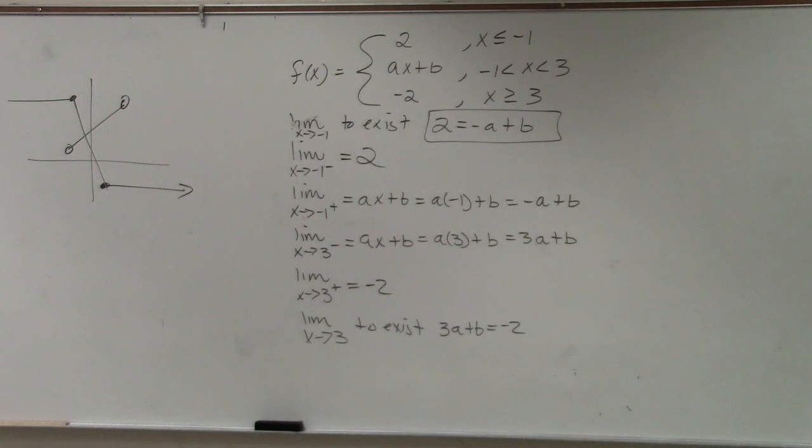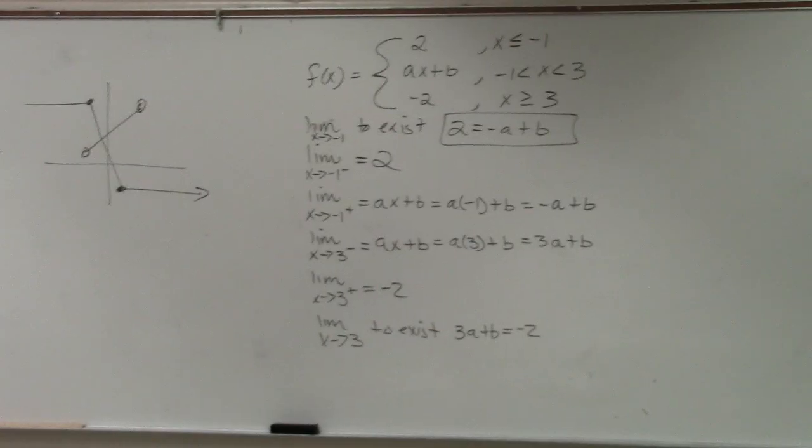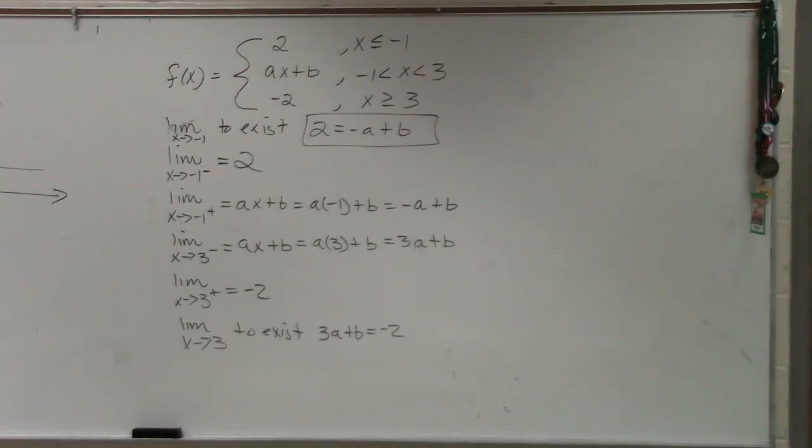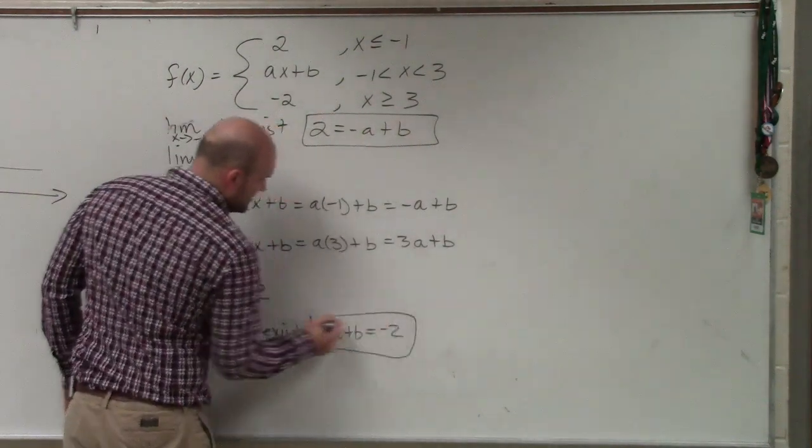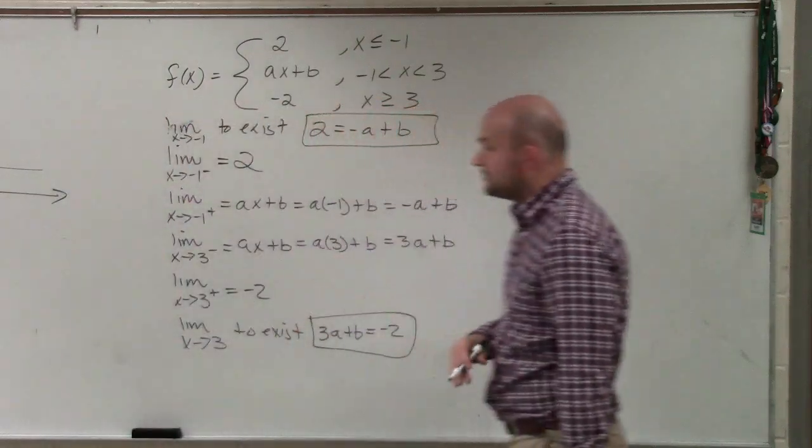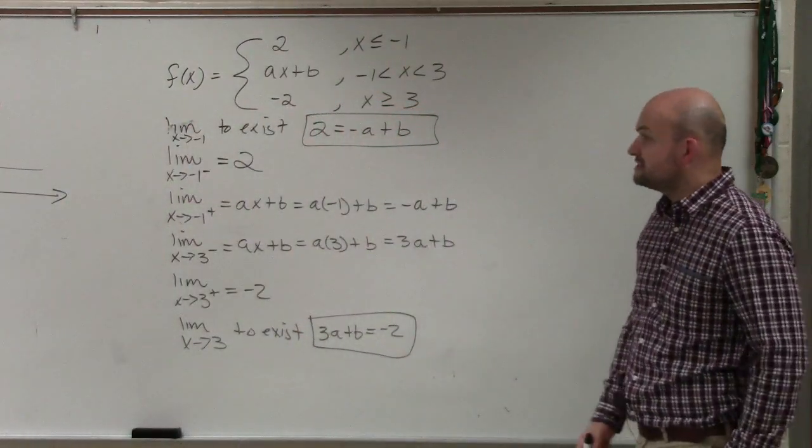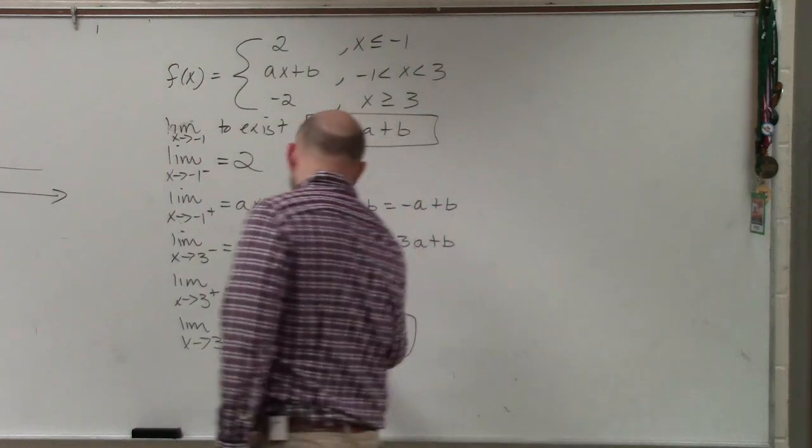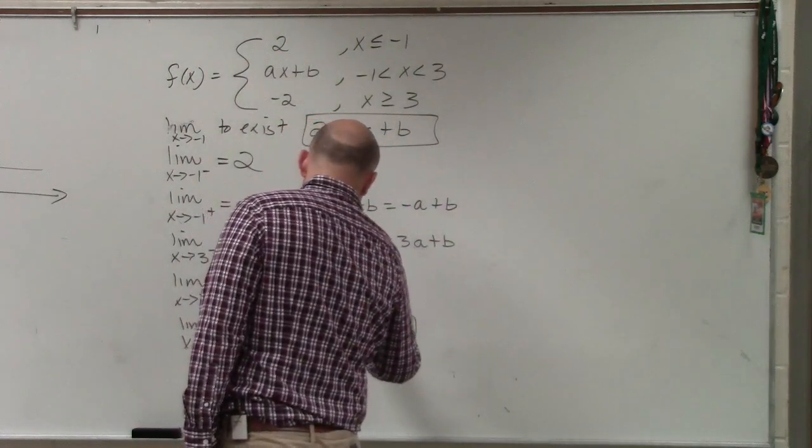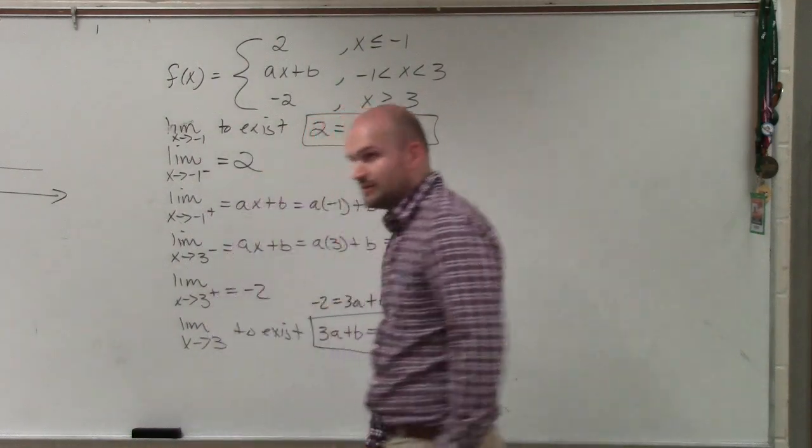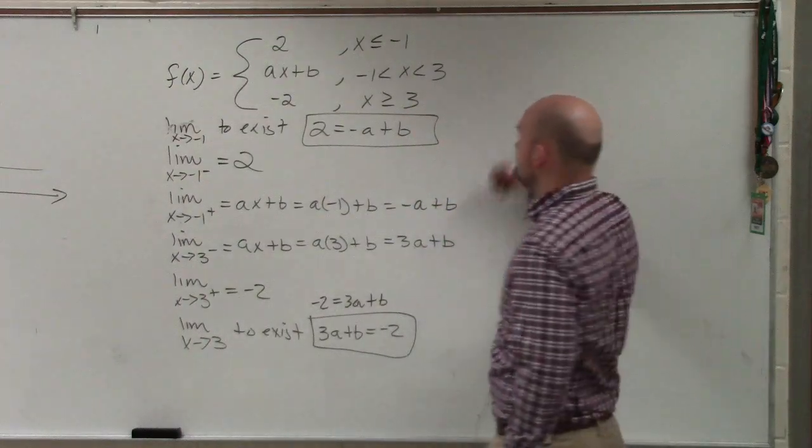the left and the right have to equal each other. Three A plus B has to equal negative two. So now we have two equations where we know that the limit needs to exist. So for this to be continuous, the limit at three needs to exist, and the limit at two needs to exist. I'm just going to rewrite this as negative two equals three A plus B. That's okay with you guys, just using the reflexive property. So therefore,